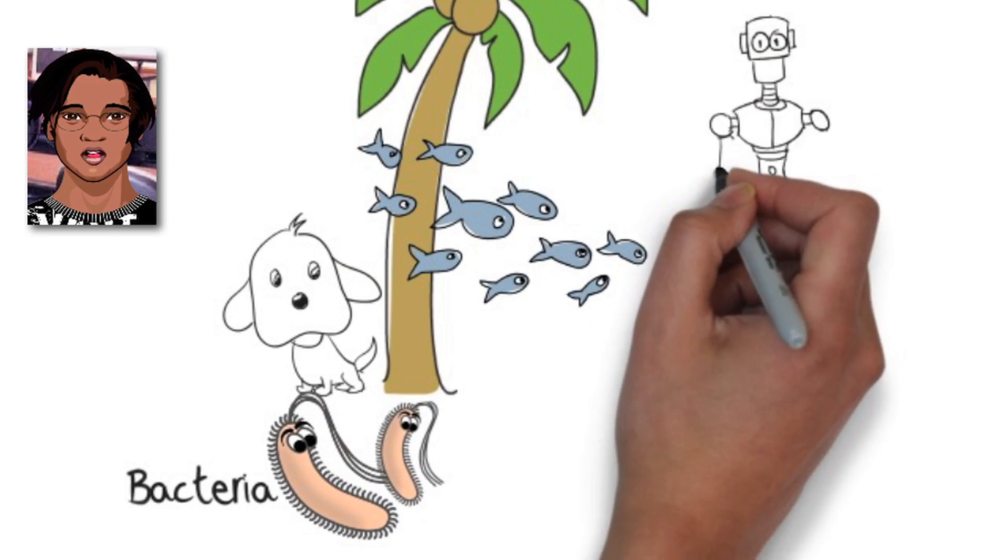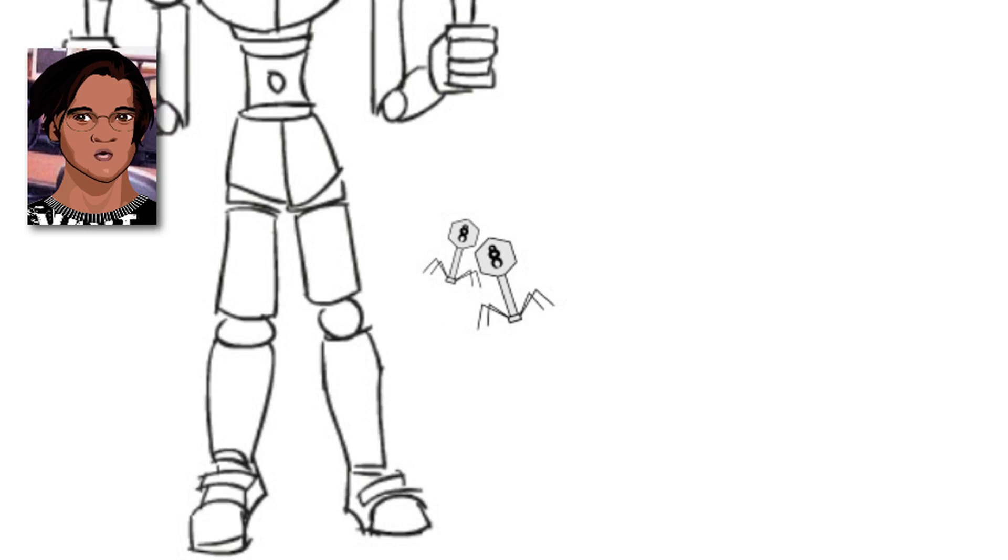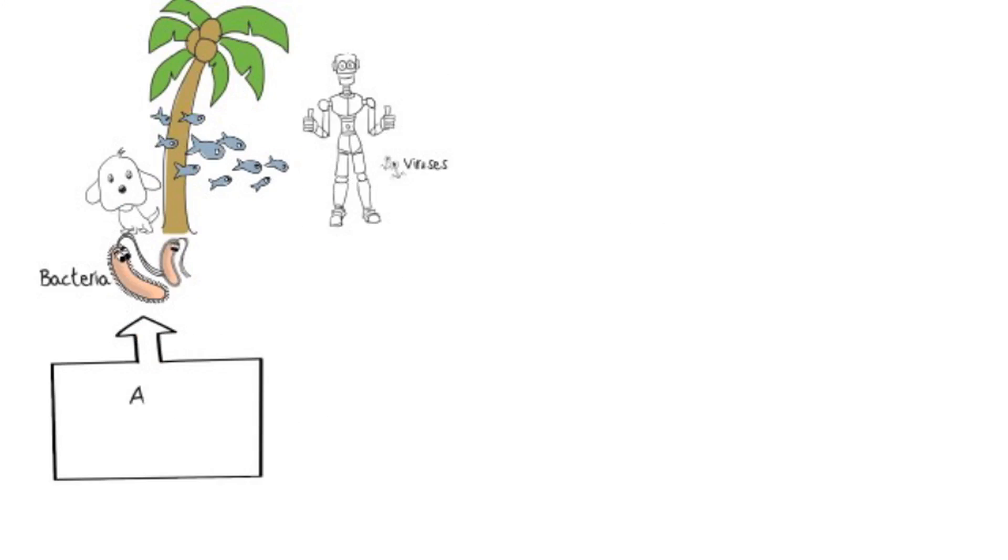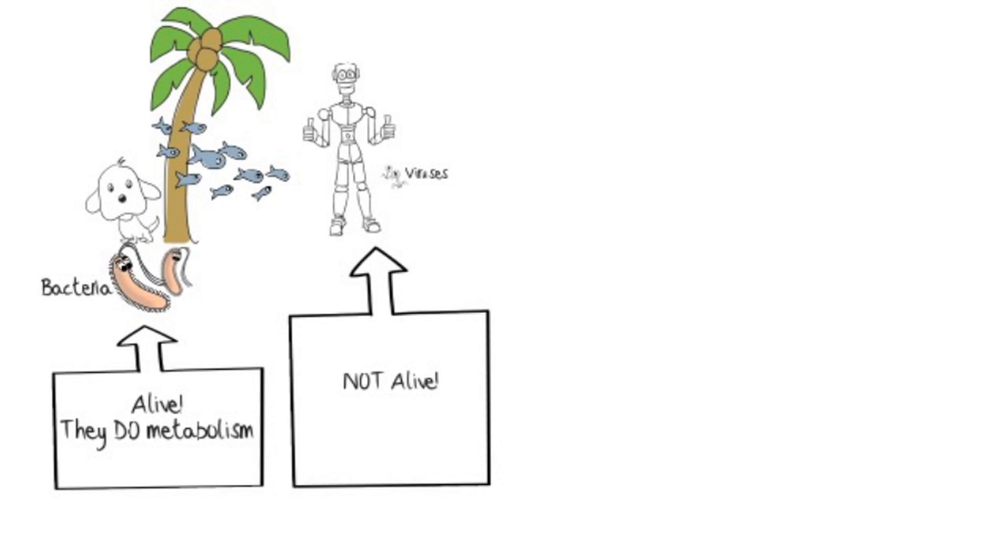Remember when we talked about the characteristics that make an organism a living organism? Metabolism was one of those characteristics. Therefore, all living organisms have metabolism. And since all living things are made out of cells, that means that all cells have metabolism.